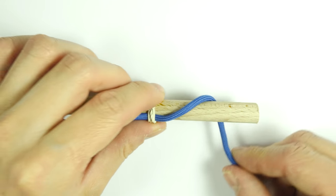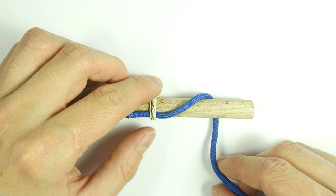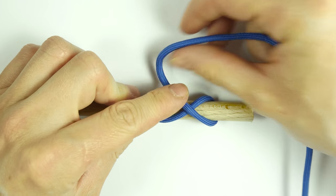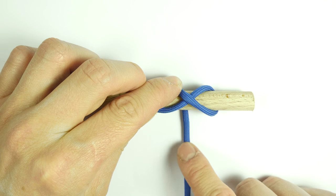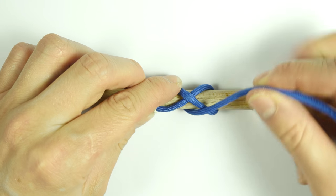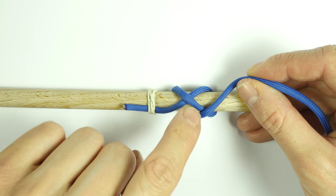Continue by doing a single wrap around. Come over the standing end, wrap around again towards the bottom side, and over, over this part.